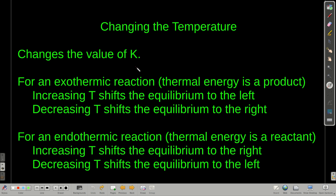What happens when we change the temperature? First, it changes K. For an exothermic reaction, thermal energy is a product. So if we increase the temperature, we're adding more energy as a product, which shifts equilibrium back to the left — to the reactant side. If we lower the temperature, we're pulling product energy away, so it shifts to the right. The opposite is true for an endothermic reaction: energy is a reactant. Adding energy (increasing temperature) shifts equilibrium to the right; removing energy (decreasing temperature) shifts it to the left.